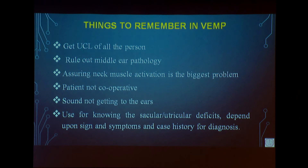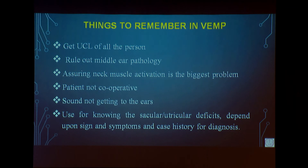VEMP alone cannot differentiate between diseases — absent VEMP can occur in ototoxicity, Meniere's disease, labyrinthitis, and neuritis alike, all affecting the saccule or utricle. Therefore, an absent cVEMP or oVEMP only tells you there is a saccular or utricular deficit. To diagnose the specific condition — whether Meniere's disease, labyrinthitis, neuritis, or ototoxicity — you must combine VEMP findings with case history and clinical signs and symptoms.